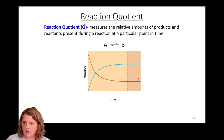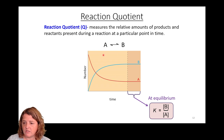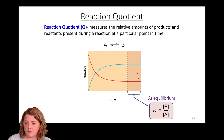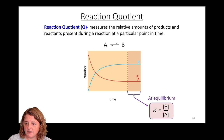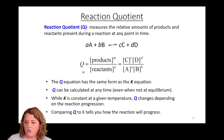We define what's called a reaction quotient, described by a capital Q. This is essentially the same thing as K — it's the ratio of products to reactants — but Q can be described at any point. K is the ratio of products to reactants at equilibrium; it is constant. The reaction quotient Q can be described anytime, whether you're at equilibrium or not, and it evolves in time until it reaches K.